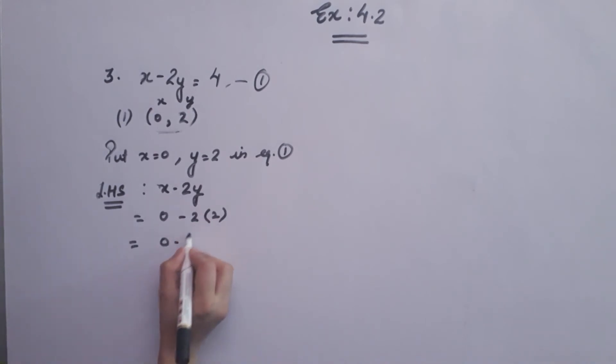0 minus 2 times 2 is 4. What is the value? Minus 4 and which is not equal to right hand side that is 4. So, left hand side is not equal to right hand side. Therefore, (0, 2) are not the solution of x minus 2y equals to 4.